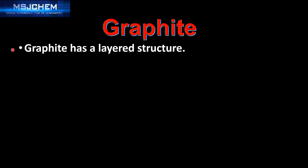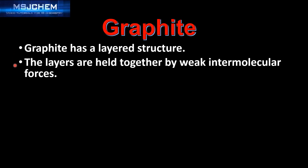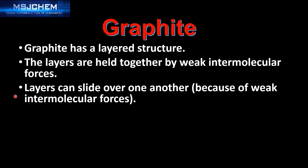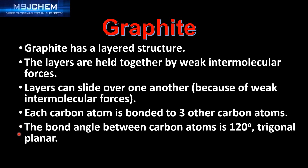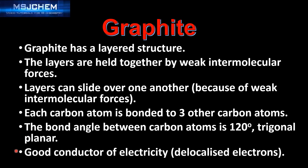Graphite has a layered structure, with the layers held together by weak intermolecular forces so they can slide over one another. Each carbon is bonded to three other carbon atoms, with a bond angle of 120 degrees — trigonal planar. Graphite is also a good conductor of electricity due to the delocalized electrons in the structure.